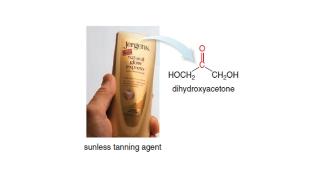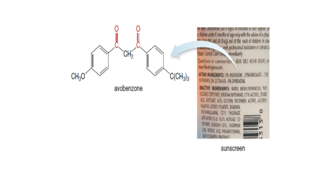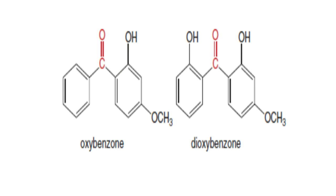Ketones play an important role in the tanning industry. Dihydroxyacetone is the active ingredient in commercial tanning agents that produce sunless tans. Dihydroxyacetone reacts with proteins in the skin, producing a complex colored pigment that gives the skin a brown hue. In addition, many commercial sunscreens are ketones that have the carbonyl carbon bonded to one or two benzene rings. Examples include avobenzone, oxybenzone, and dioxybenzone.